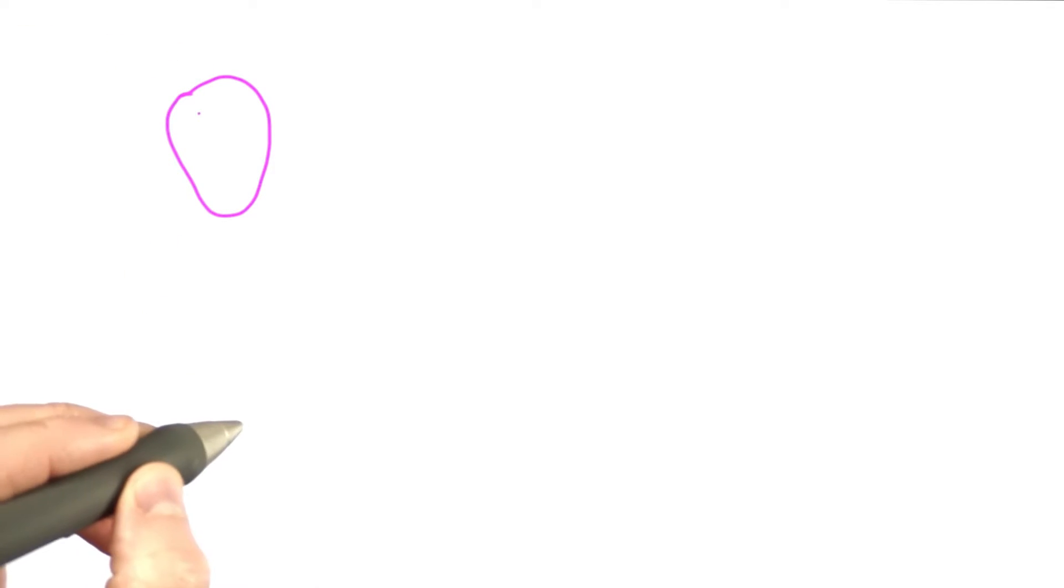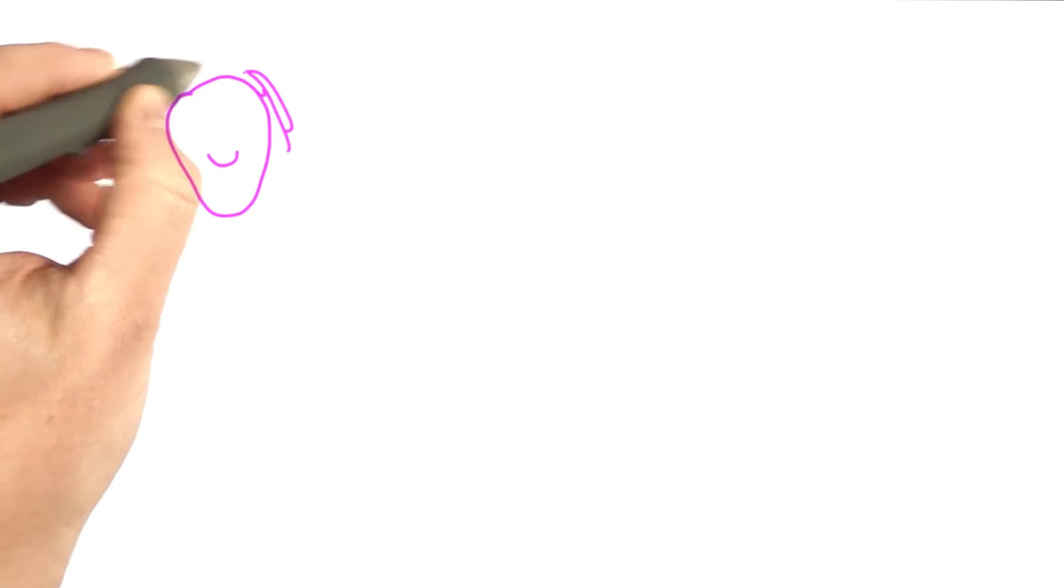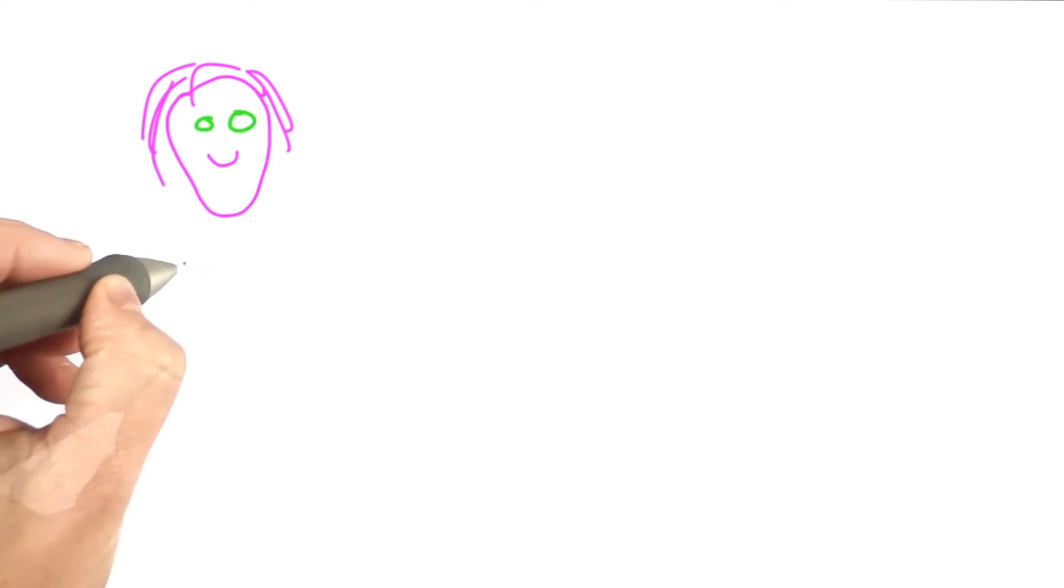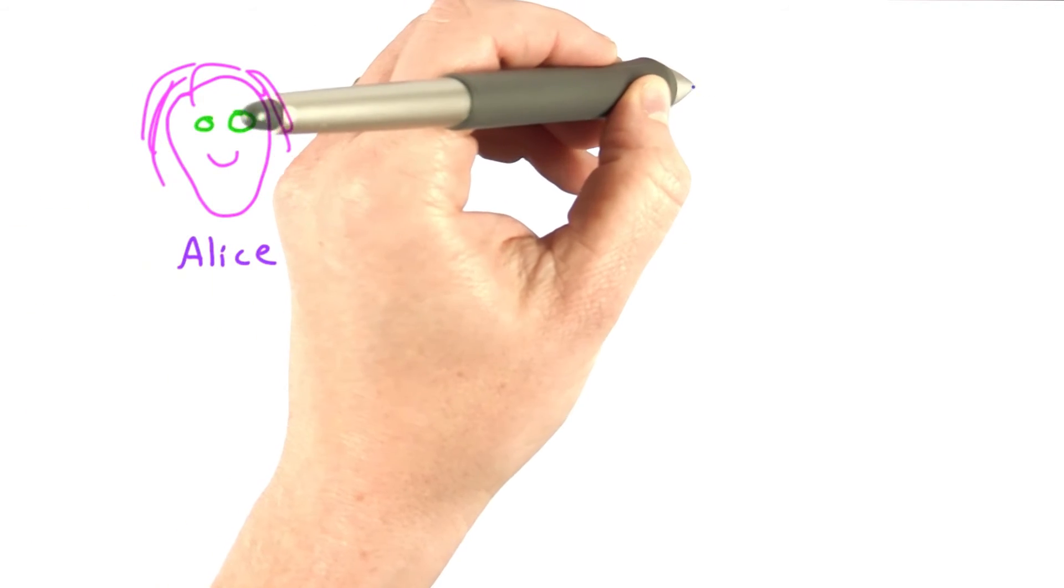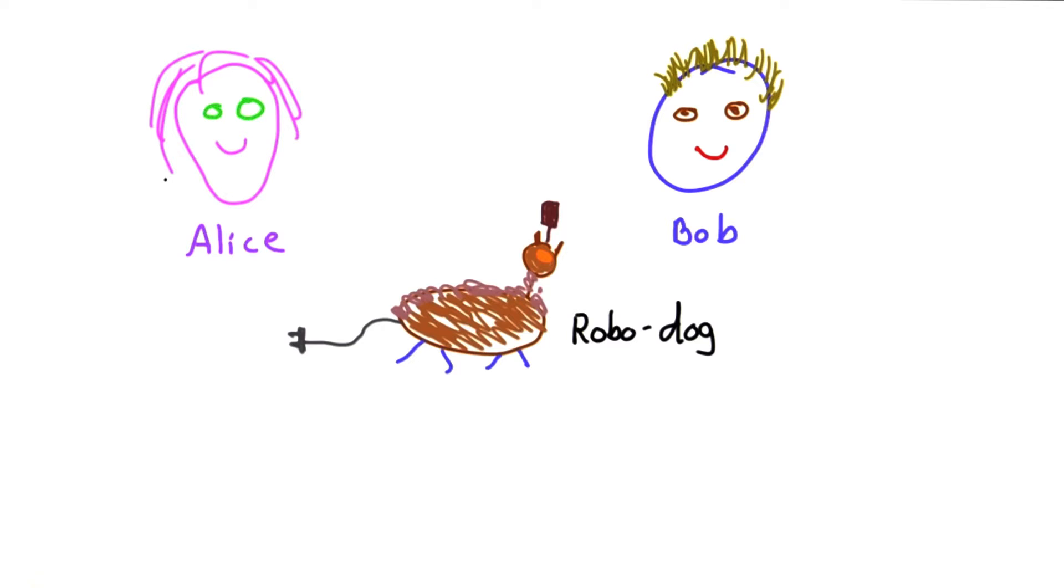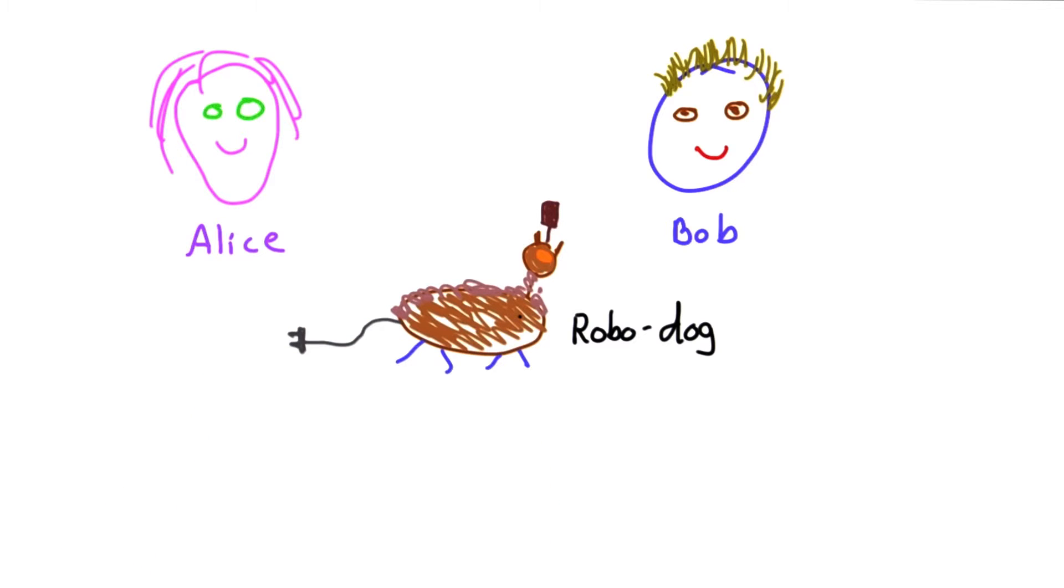I'm going to motivate this with a somewhat silly example, but something that will illustrate many of the properties that are important for cryptographic protocols. As usual, we have Alice and Bob. She's Alice in case you cannot recognize her. And we have Bob. And Alice and Bob want to decide whose turn it is to charge the robo-dog. If you can't recognize my drawing, this is indeed a robo-dog.